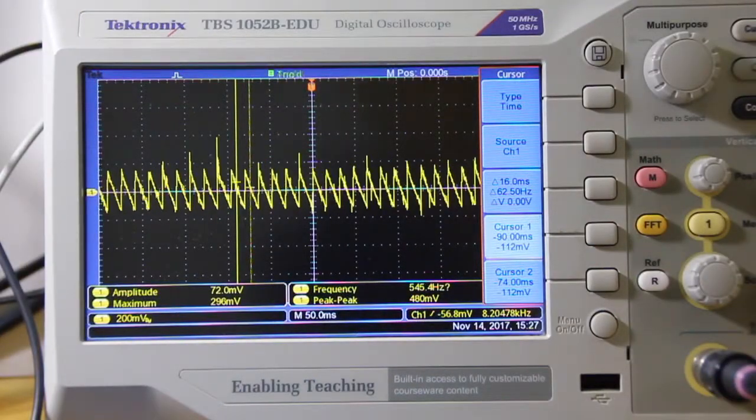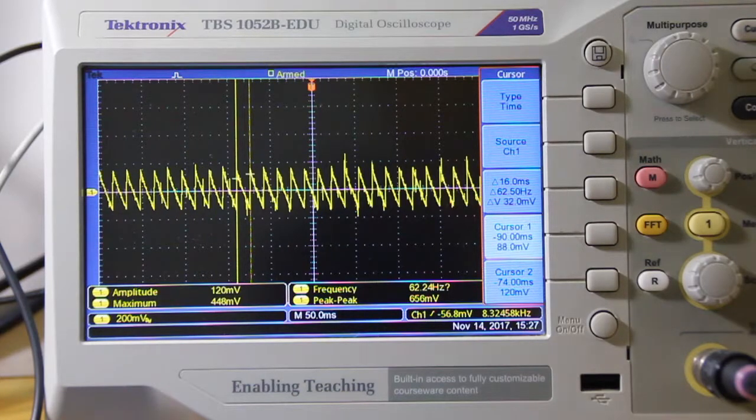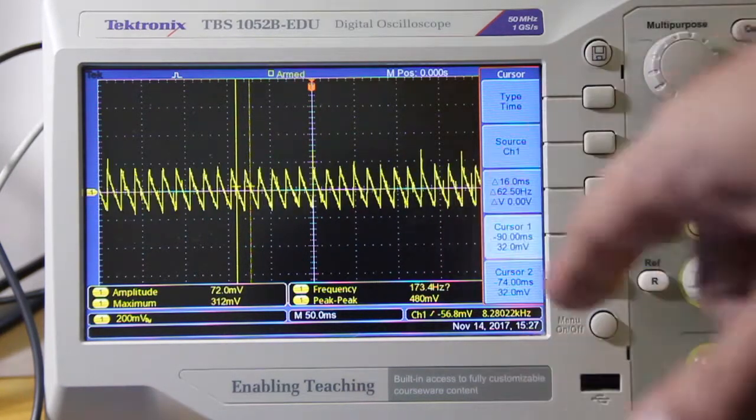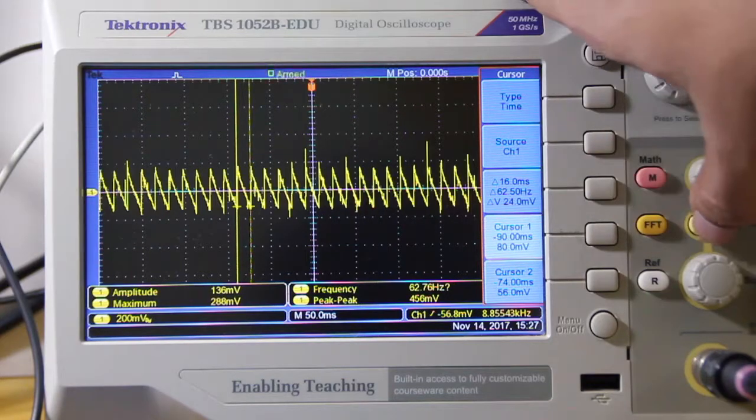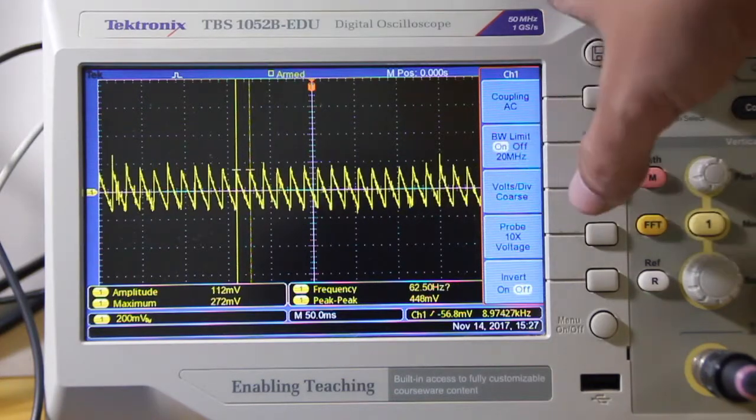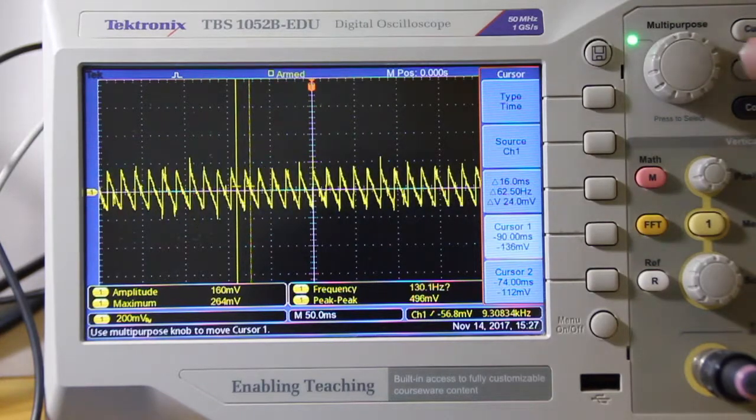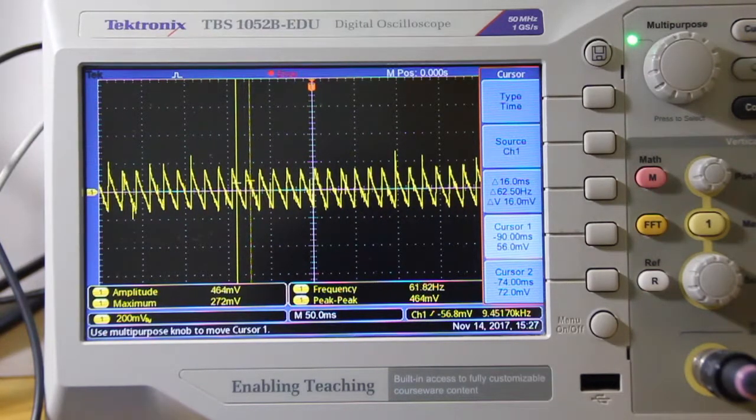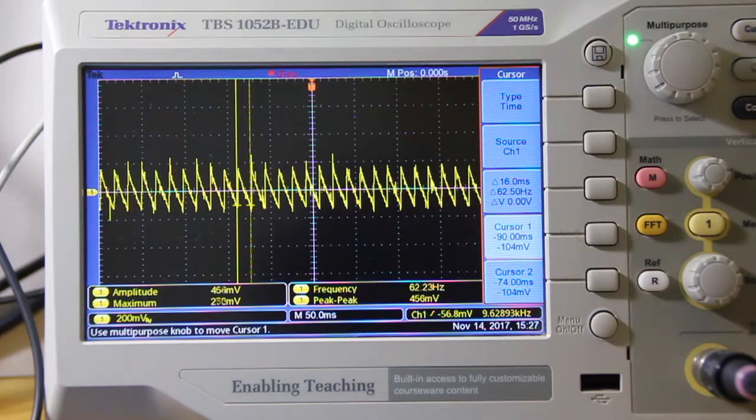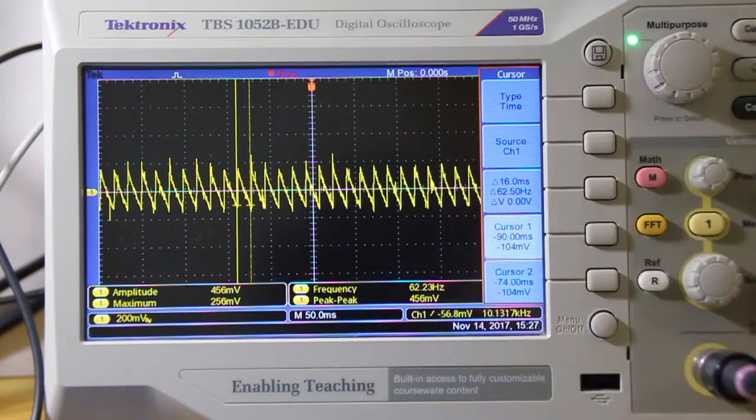I've hooked up the power supply output to this Tektronix 50 megahertz scope. I've limited the bandwidth on channel 1 to 20 megahertz and I'm using cursors to identify the frequency, so it's about 60 Hertz or so.